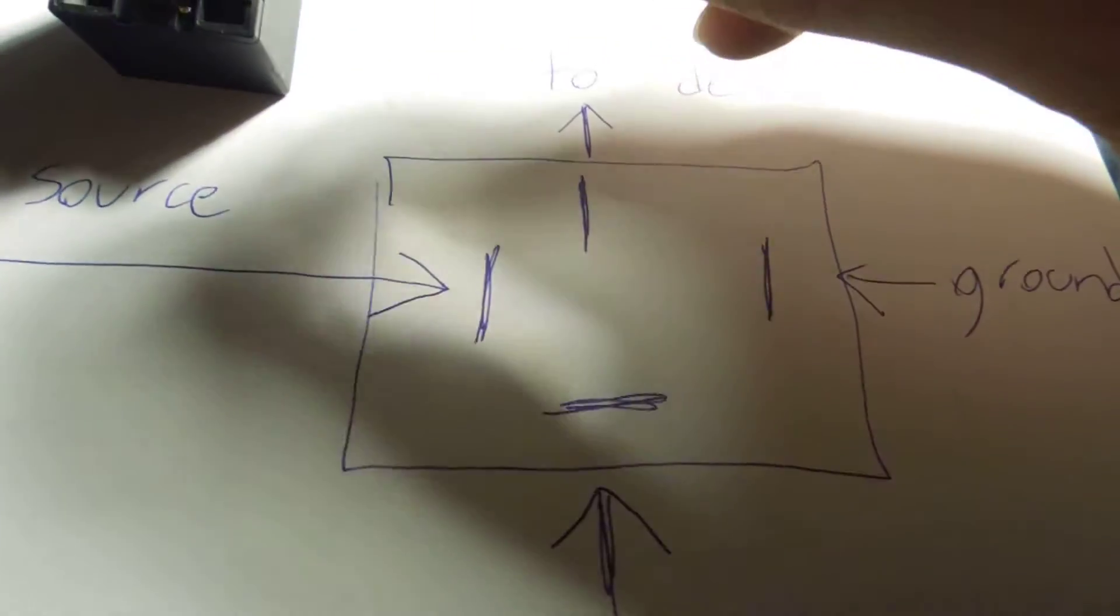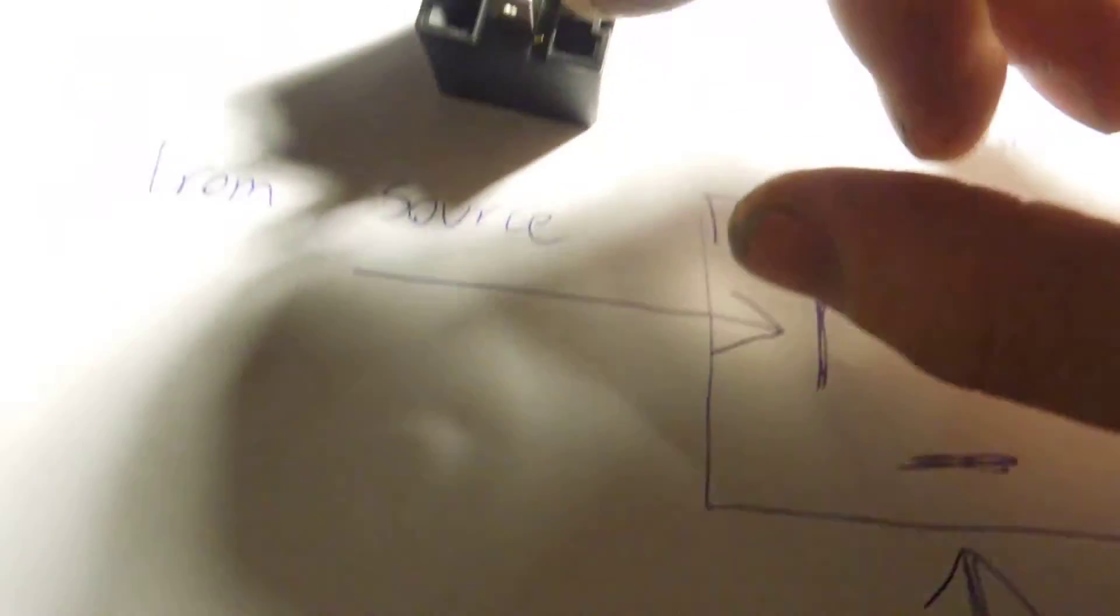So the best way to say it is you always have to have on pins 85 and 86 opposites. So let's say you're doing a negative trigger.